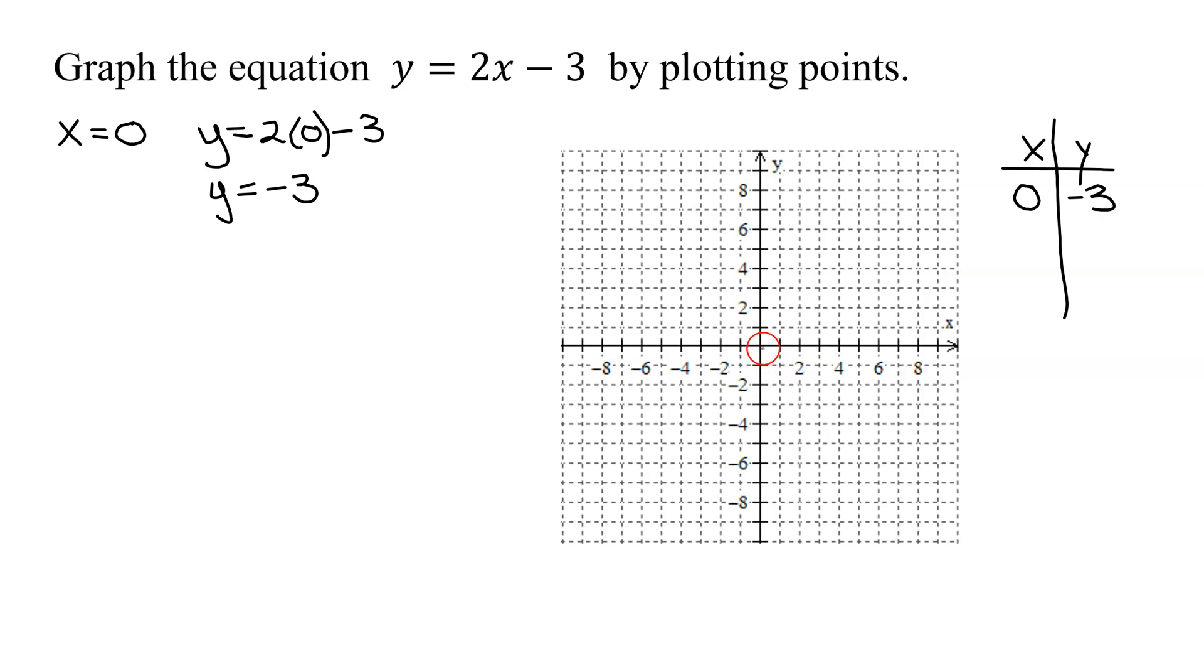So let's plot that point. We start at the origin. x is 0, go nowhere in the x direction. y is negative 3, go down 3. There's my first point.